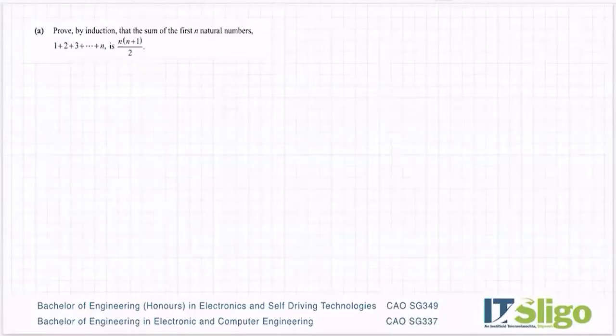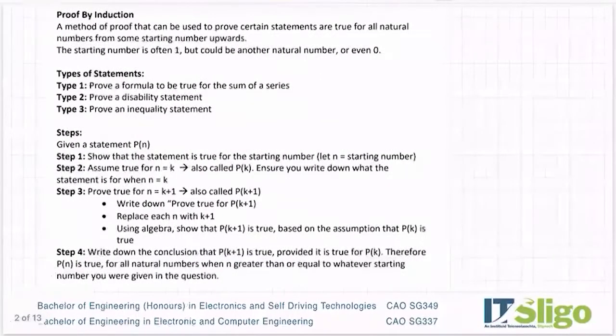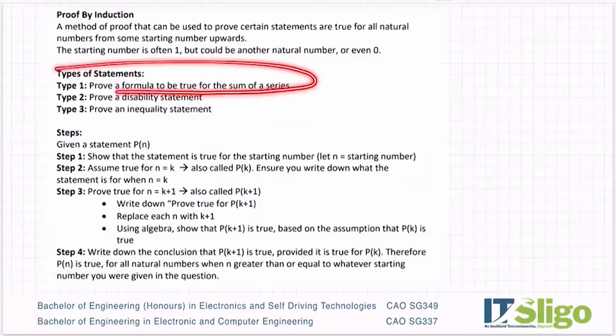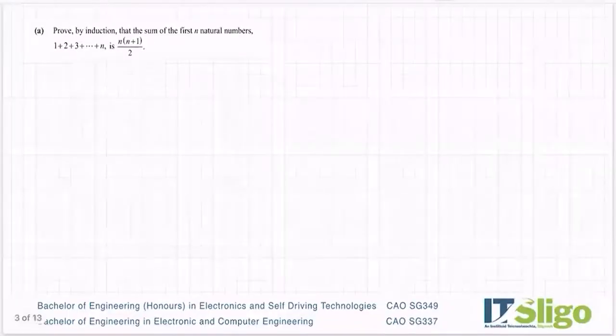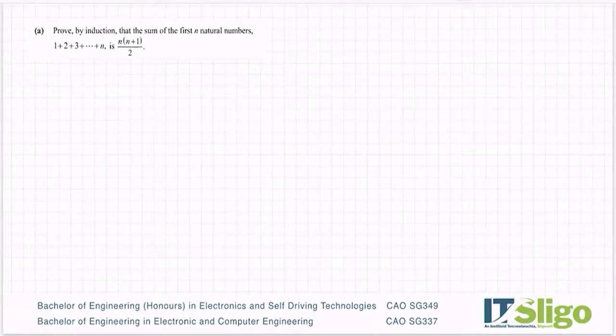Okay this question, prove by induction that the sum of the first n natural numbers 1 + 2 + 3 all the way up to + n is n times (n+1) over 2. So it's part of the first type that we went through there, the sum of the series. It's the sum of the first n natural numbers. Let's go through our steps.